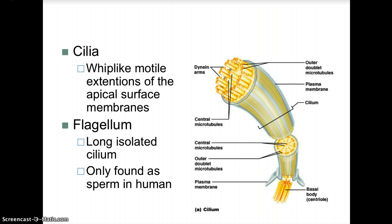Cilia are whip-like motile extensions of the apical surface membranes that move back and forth. Some tissue types are ciliated and some are not. Flagellum are long isolated cilia and are only found in human sperm, functioning as that whip-like structure.